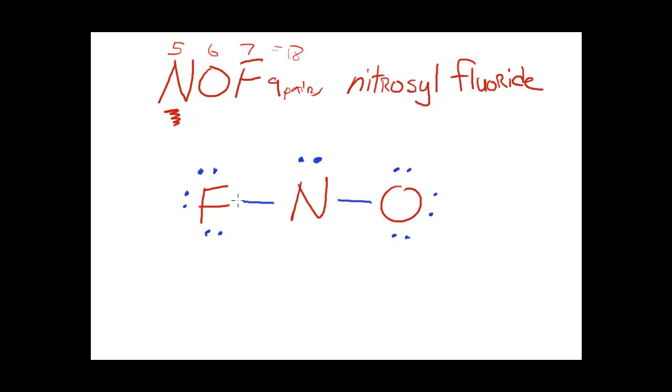The octets are satisfied for the outside atoms but not for the central atom. So I'm going to now slide in one of the pairs to form a double bond. The question is which one do I choose? Should I choose fluorine or oxygen? To make this decision, I'm going to go with the one that follows the common bonding modality of two bonds and two lone pairs. That happens to be oxygen.